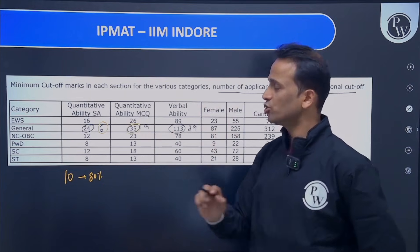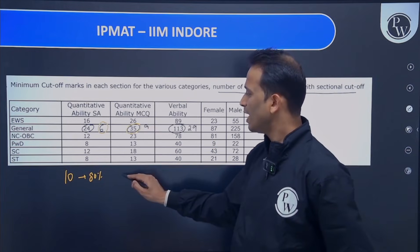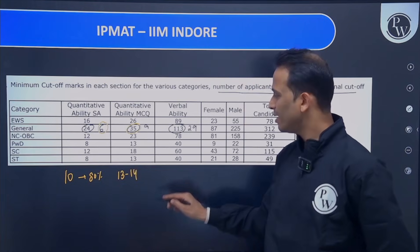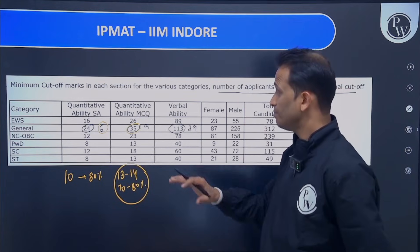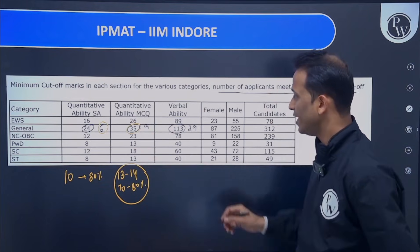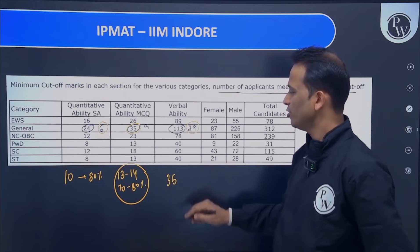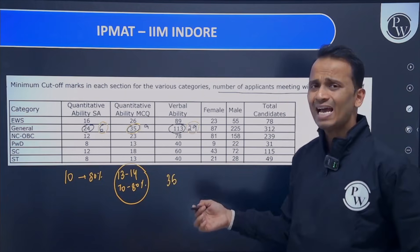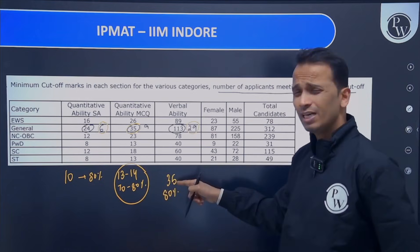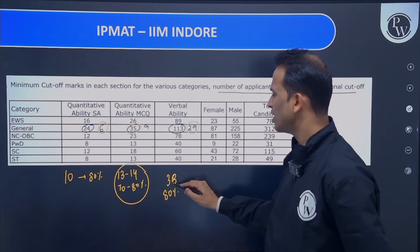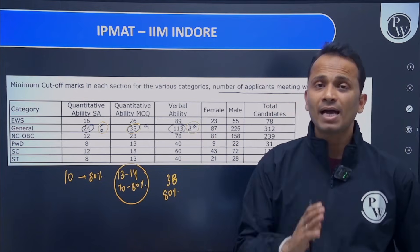For the second section (subjective QA), the general category cut-off was 35 marks. Attempting around 13 to 14 questions with 70 to 80% accuracy will let you take over this section easily. Finally, for verbal ability, target around 35 to 38–39 questions with approximately 80% accuracy to reach the cut-off of 113 marks. This covers the IPMAT Indore examination strategy.